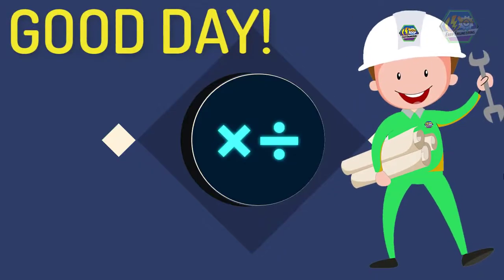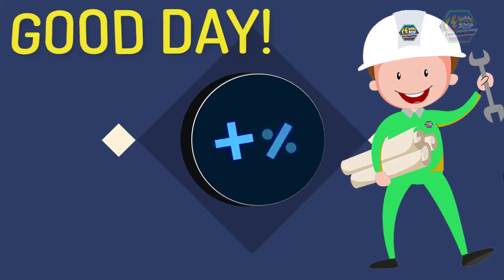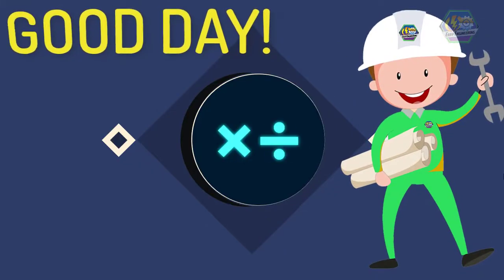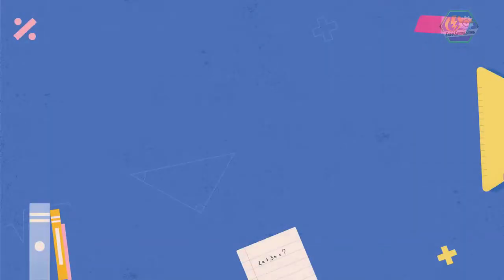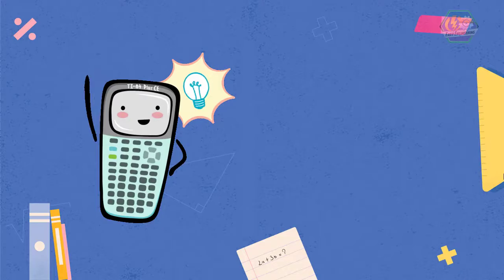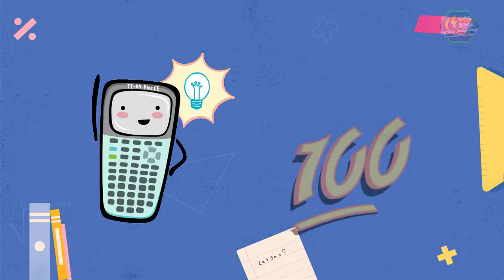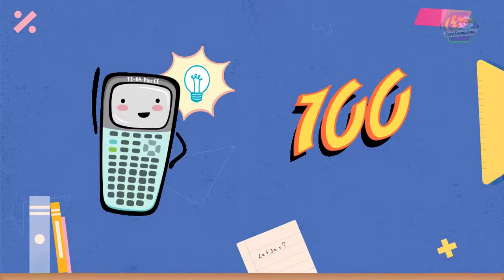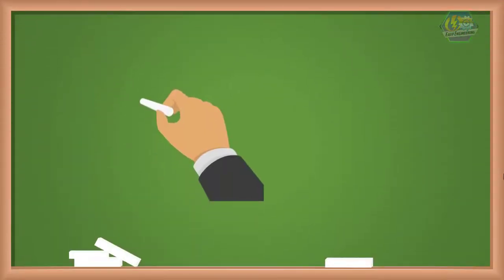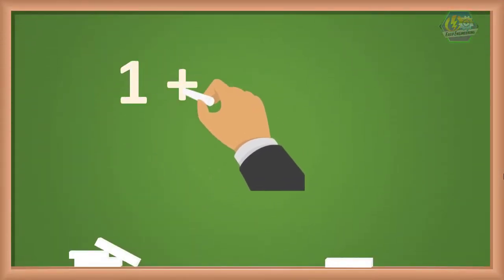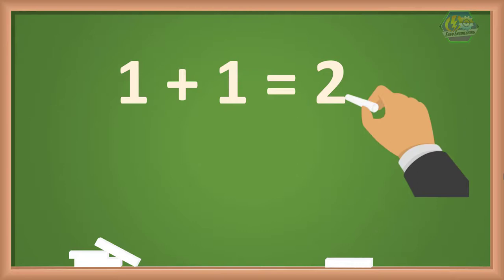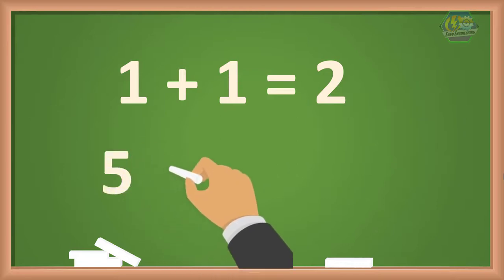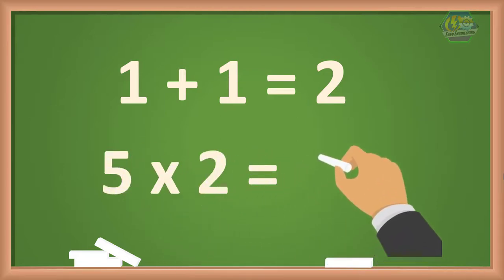Good day learners, this is Easy Engineering. For today's topic we are going to learn about probability. Usually in mathematics we deal with things that always happen in the same way and are always certain, like if we add 1 plus 1 we always get 2, or if we multiply 5 times 2 we always get an answer of 10.